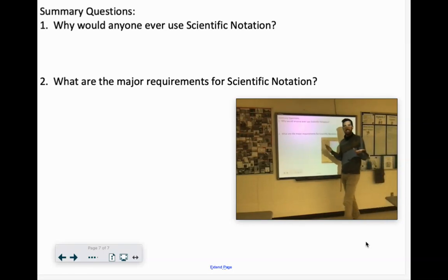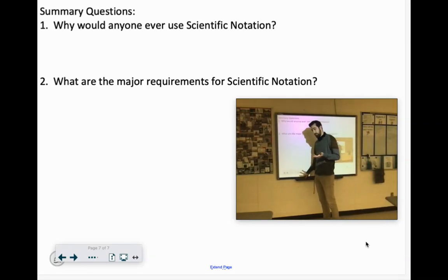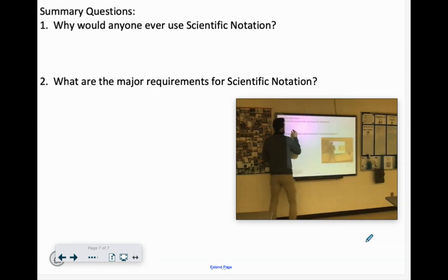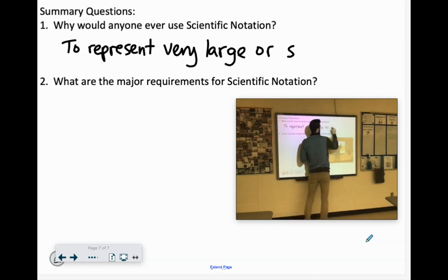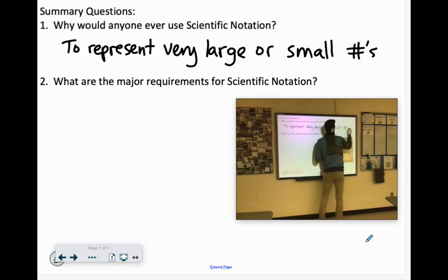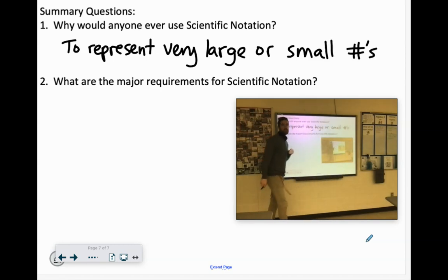Why would anyone use scientific notation? What is a way that you can represent very large or very small numbers in a condensed form? So we'll say to represent very large or small numbers, large or small #'s, folks.